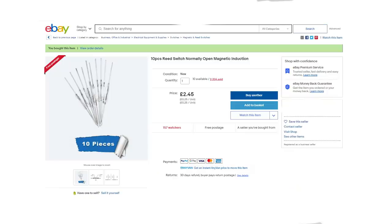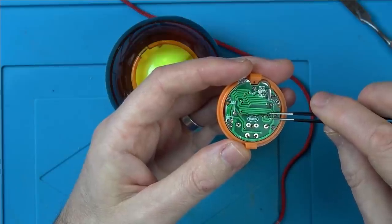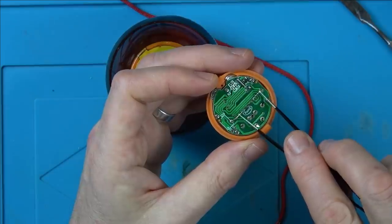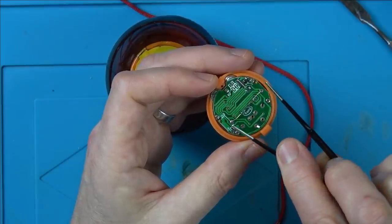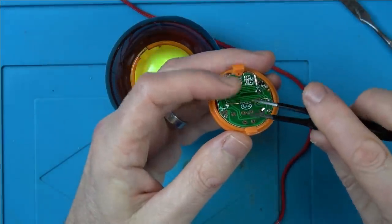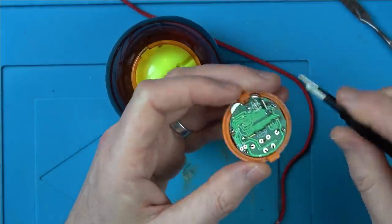So I had a look on eBay at reed switches, and I bought 10 of them for £2.50, so 25p each. I got ones that are 2mm in diameter for the glass, and that's the same as here. 14mm glass length, and that's the same as here. And the lead itself is 45mm. So hopefully it will be exactly the same. These are normally open until the magnet comes, and then it closes.